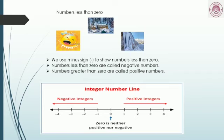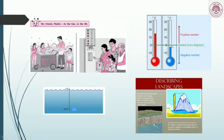We can show negative numbers on the number line. The numbers 1, 2, 3 to the right of 0 are called positive numbers, and the numbers −1, −2, −3 to the left of 0 are called negative numbers. On a thermometer, positive numbers are above 0 and negative numbers are below 0.